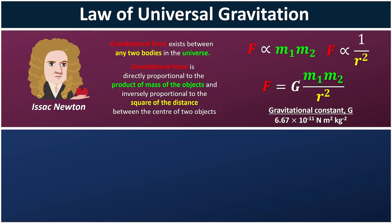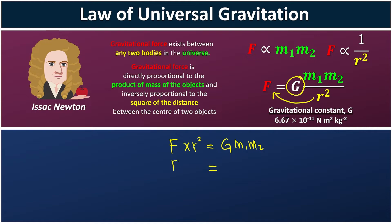So you can imagine now, if you want to find G, multiply both sides by R squared. You will have F times R squared equals G times M1 times M2. Then if you want to find G, divide both sides by M1 and M2.